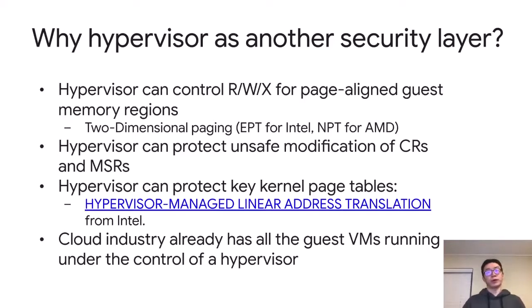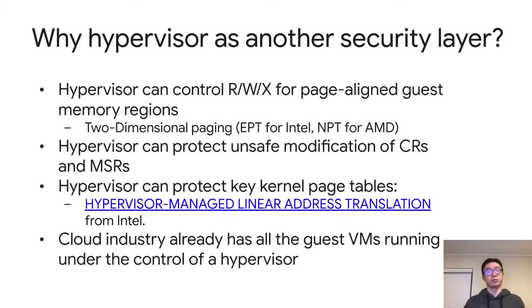The hypervisor can also protect the key kernel page table. There is a new feature called hypervisor-managed linear address translation (HLAT) from Intel, which allows you to set up page table mappings controlled by the hypervisor that guests can never change. And most importantly for Google Cloud, all of our customer machines are already running in virtual machine mode — we already have a layer underneath all those VMs. We are not introducing another layer of complexity; we are just using the existing layer to make everything more robust and secure.